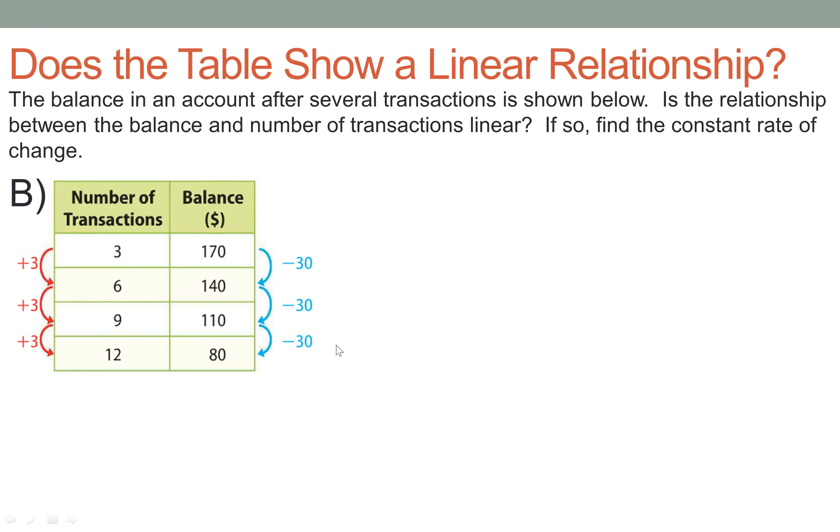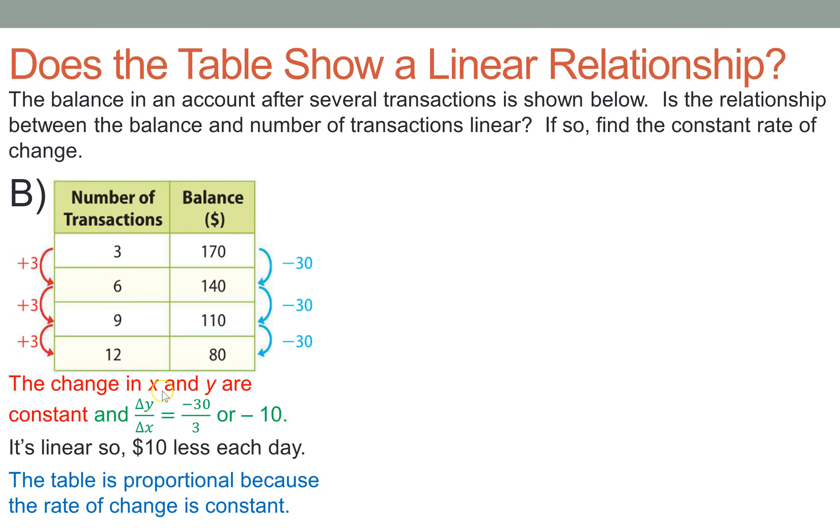This, of course, means several important things. The first thing is in red: the change in X and Y are constant. We see this is plus three, plus three, plus three. And the change in Y, which is negative 30, negative 30, negative 30. Boom! That's the green stuff.